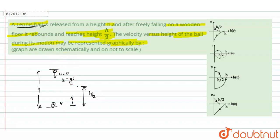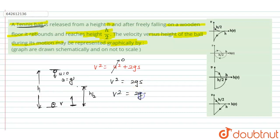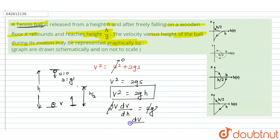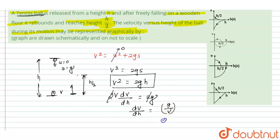After striking, it rebounds and reaches height h/2. The first conclusion: since u = 0, we know that v² = u² + 2gs. With initial velocity equal to 0, v² = 2gs. Since the height is h, we can write v² = 2gh. Differentiating with respect to h: 2v·dv/dh = 2g, and the 2s cancel, giving dv/dh = g/v. Since g is constant, we write dv/dh = c/v.